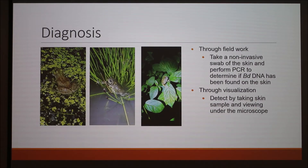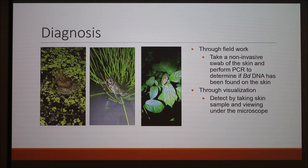It's kind of hard to diagnose frogs with this in captivity because you usually don't want to do something invasive. One thing you can do is take a sample of the skin and look at it under the microscope, but taking off a part of the skin is really invasive, especially for frogs since their skin is so important. Another way is through field work — you go out, catch a frog, swab the skin, and then run a PCR to determine if there's any chytrid fungus DNA on the skin.